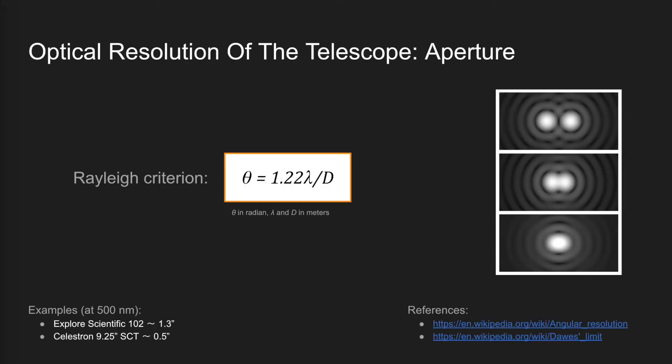Let's start with the optical resolution. The Rayleigh criterion shows that the minimum angular spread that can be resolved by an imaging system is a function of the wavelength — lambda — and the aperture of the telescope, basically the diameter of the objective lens or the primary mirror. As an example, the theoretical optical resolution of an Explore Scientific 102mm refractor is about 1.3 arc seconds, and that of a Celestron 9.25-inch Schmidt-Cassegrain telescope is about half an arc second.